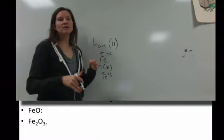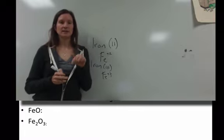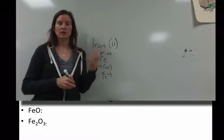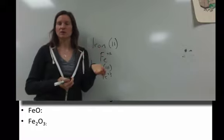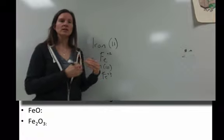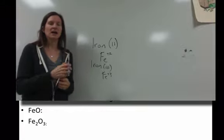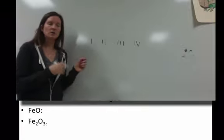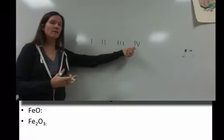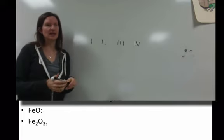For alkali metals, alkaline earth metals, aluminum, zinc, and silver, you don't need to include the Roman numerals because we know what their charges are just based on their position on the table. For every other metal, you will need to include a Roman numeral to indicate what the charge is on the ion. These are the Roman numerals you're going to include: 1, 2, 3, 4. We usually don't go above 4, again, because of that octet.